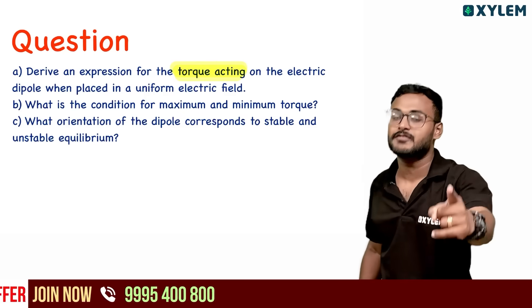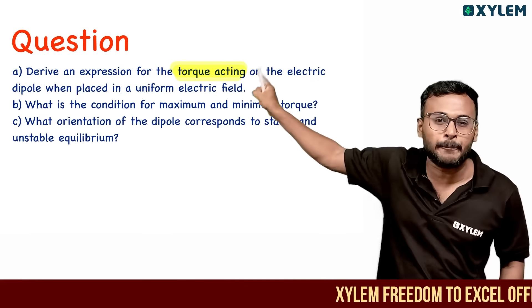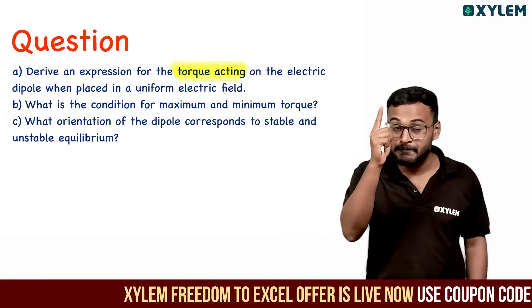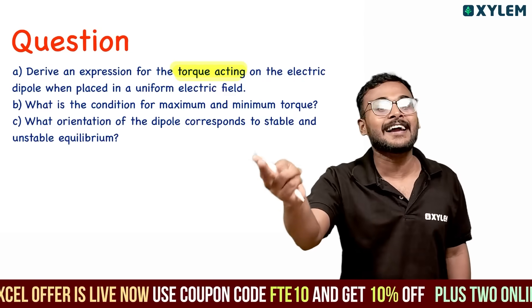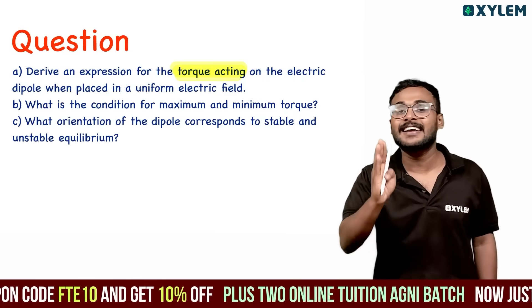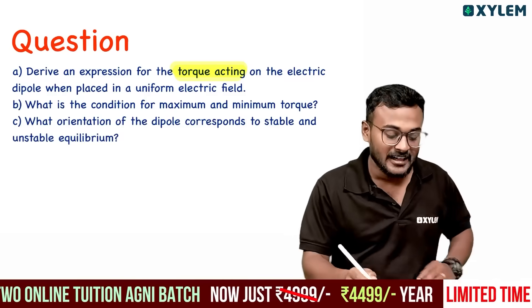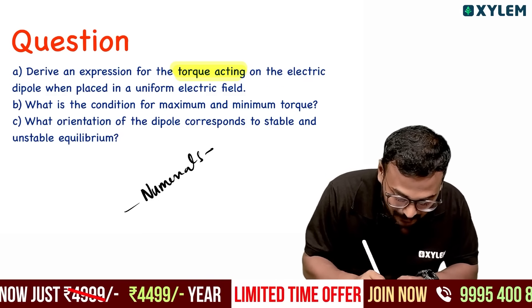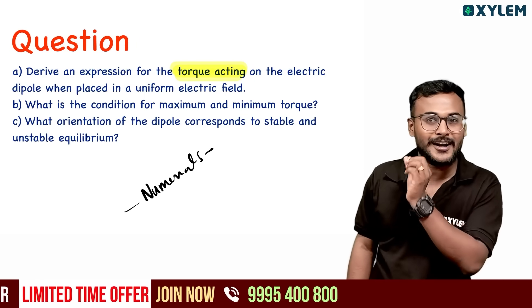In a uniform electric field, we have a dipole. This is the torque maximum. This is the torque minimum — it is stable. Torque-oriented numericals — learn how to do it. It is very important.